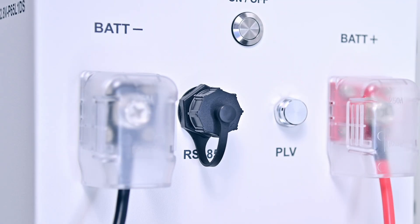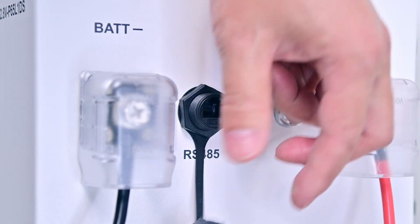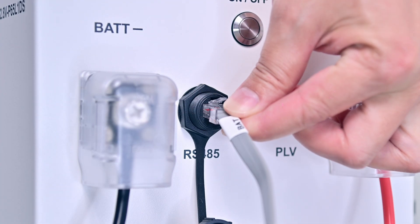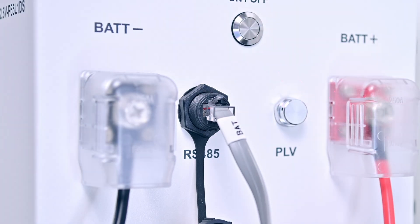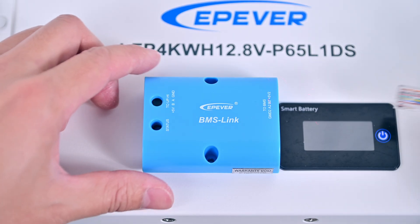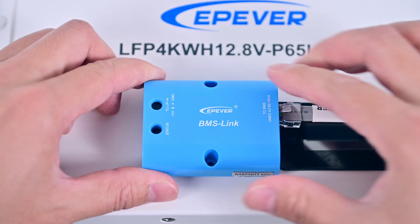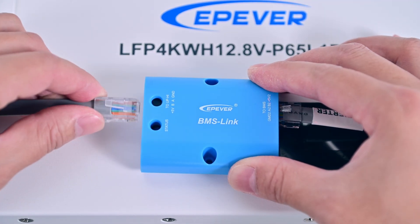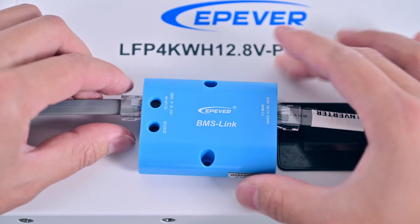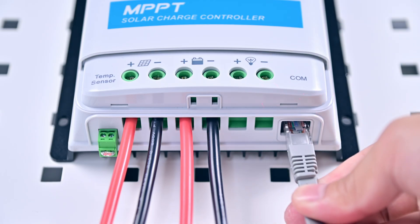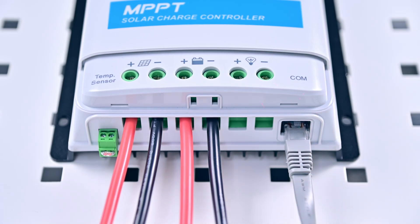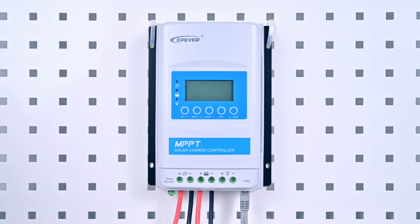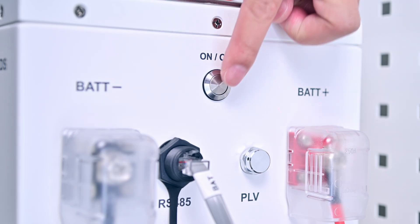First, connect the RS-485 communication cable labeled BAT to the battery. Next, connect the other end to the BMS-e-link module. Then, connect the module to the controller. Once you've confirmed that the connections are correct, power on the system.